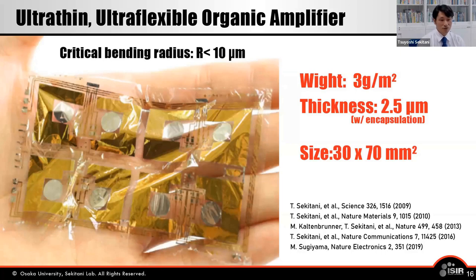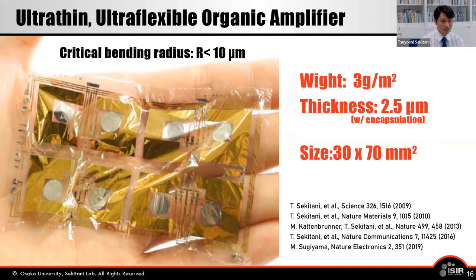I would like to introduce this ultra-thin lightweight biosignal amplifier circuit. The weight is 3 grams per square meter. Total thickness is 2.5 micrometers, including encapsulation layers. The size is approximately 30 millimeters by 70 millimeters. The critical bending radius is about 10 micrometers, indicating excellent mechanical flexibility. The amplification circuit is constructed using ultra-flexible organic transistors.